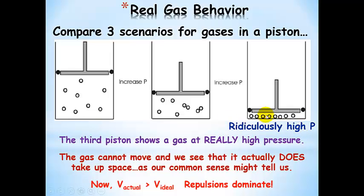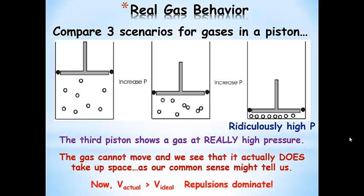If we go to a ridiculously high pressure, we've taken up all of the excess volume, squeezed the piston down as far as possible, and the gas can't move around. We can see that it actually does take up space. With the ideal gas law we assume gas molecules don't take up any space, but they actually do. When you put a high enough pressure on them, there's a point where you can't make the volume zero. At these really high pressures, repulsions dominate — molecules are repelled by each other because they each have a certain volume they must occupy.